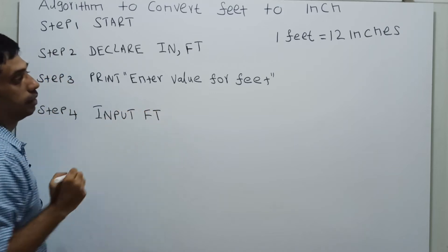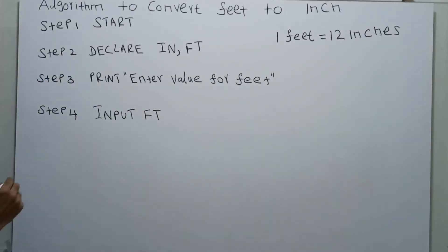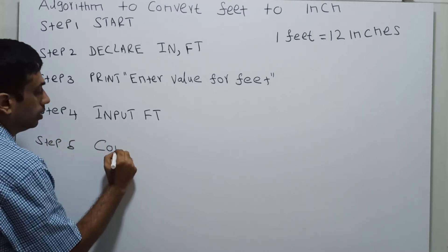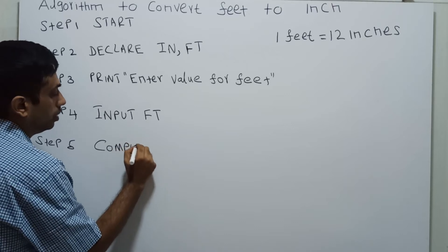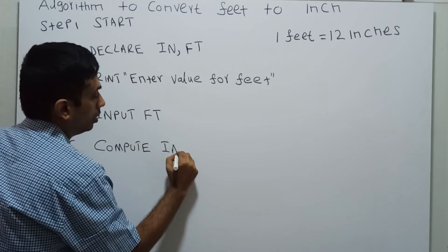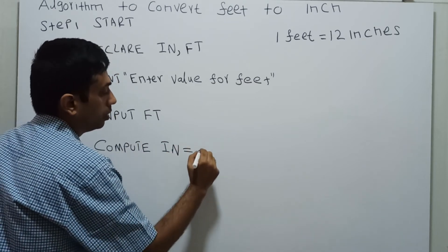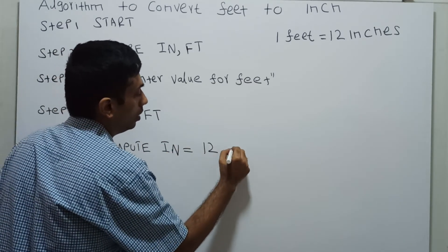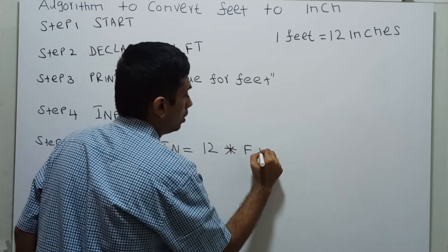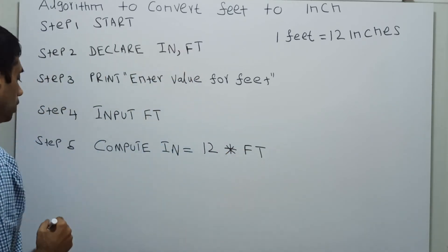Step five: COMPUTE. Compute IN equals 12 into FT.